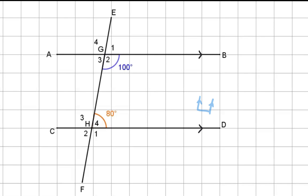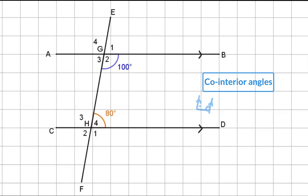If the arms of the U are parallel, the sum of the two angles on the inside of the U will be 180 degrees. And as I've mentioned, these two angles are called co-interior angles.